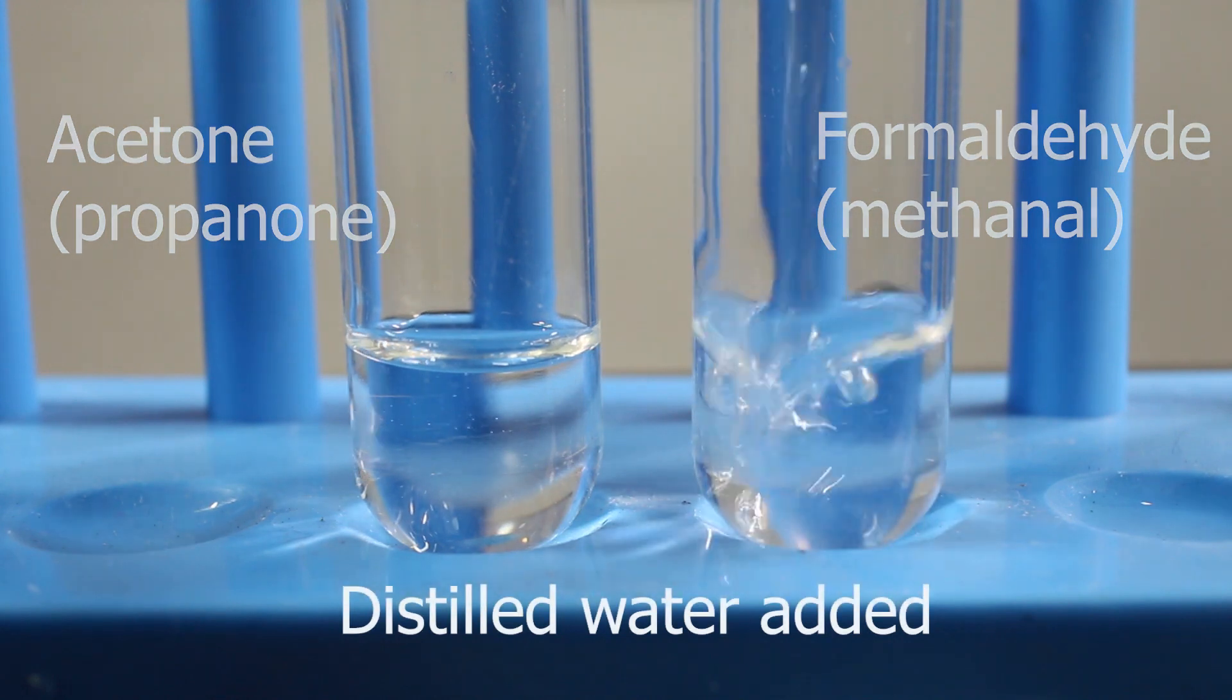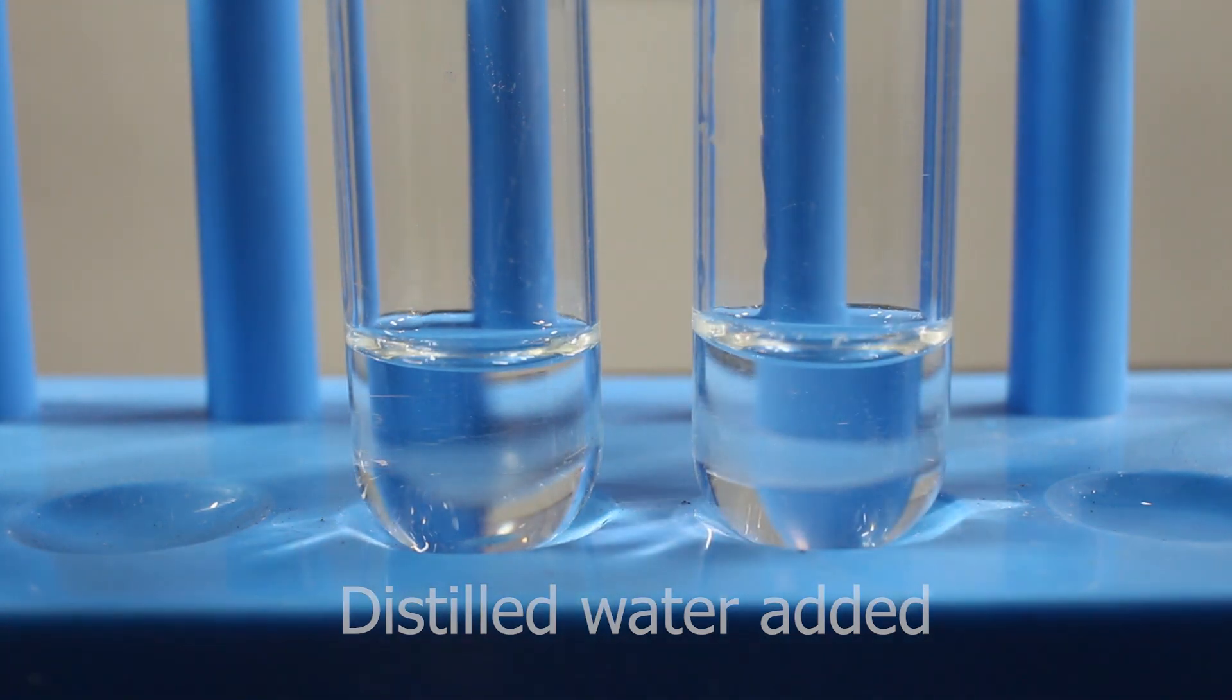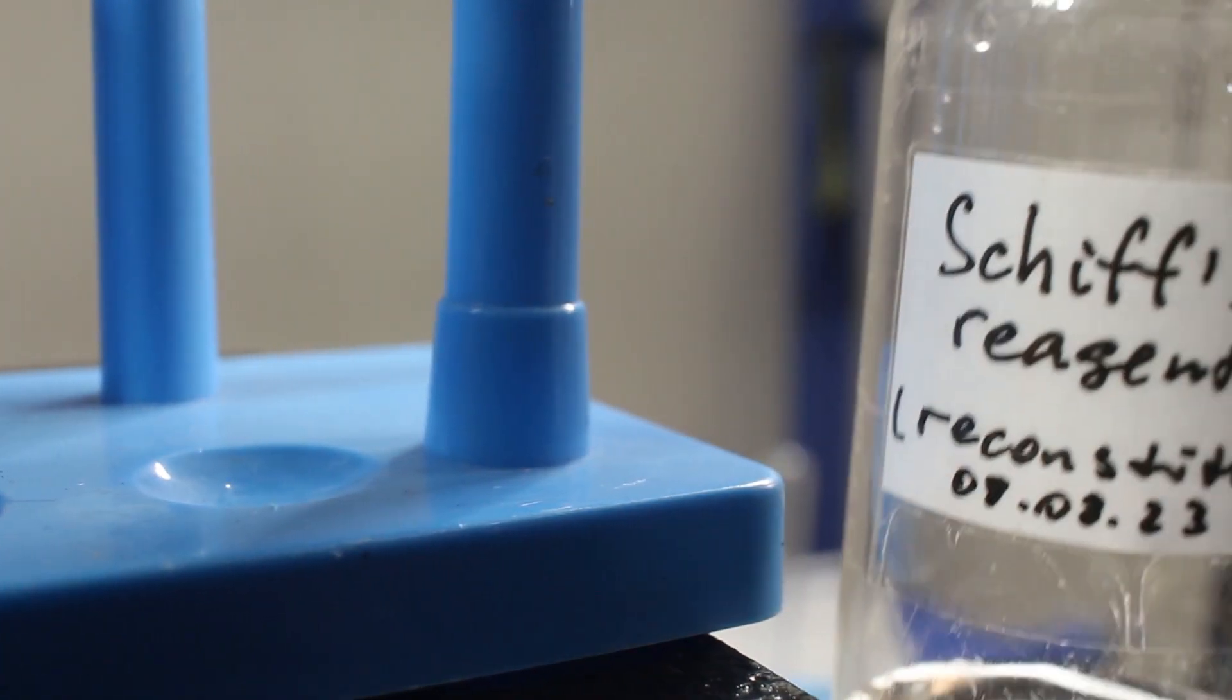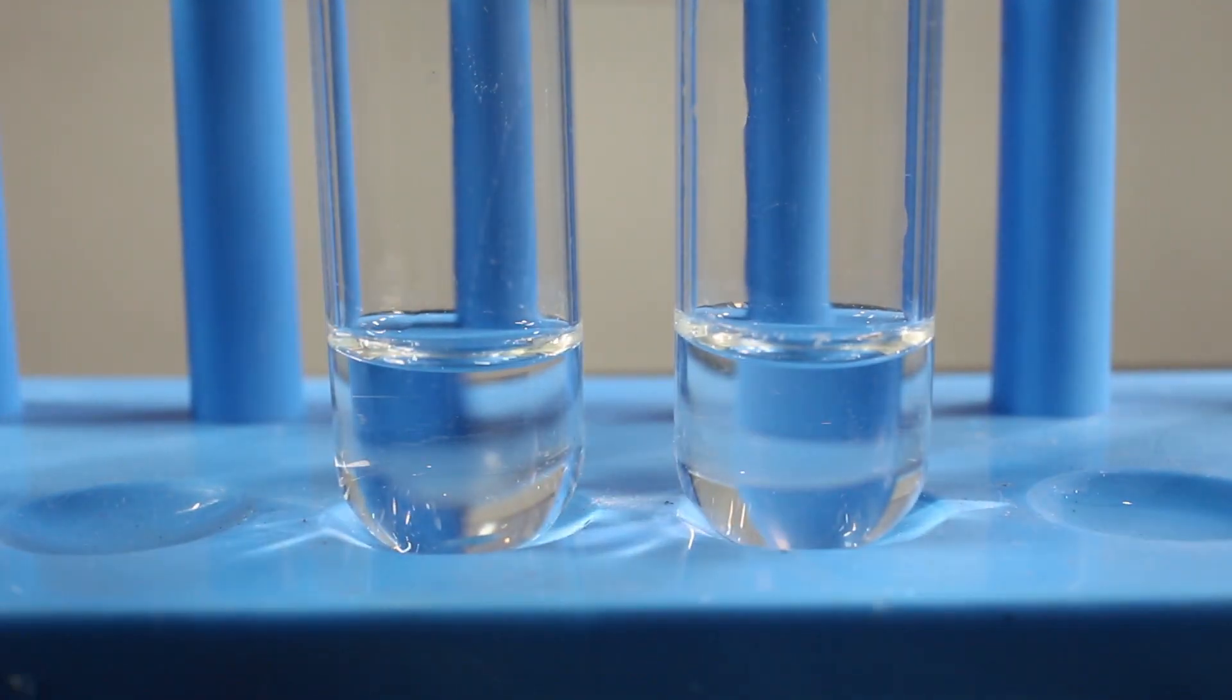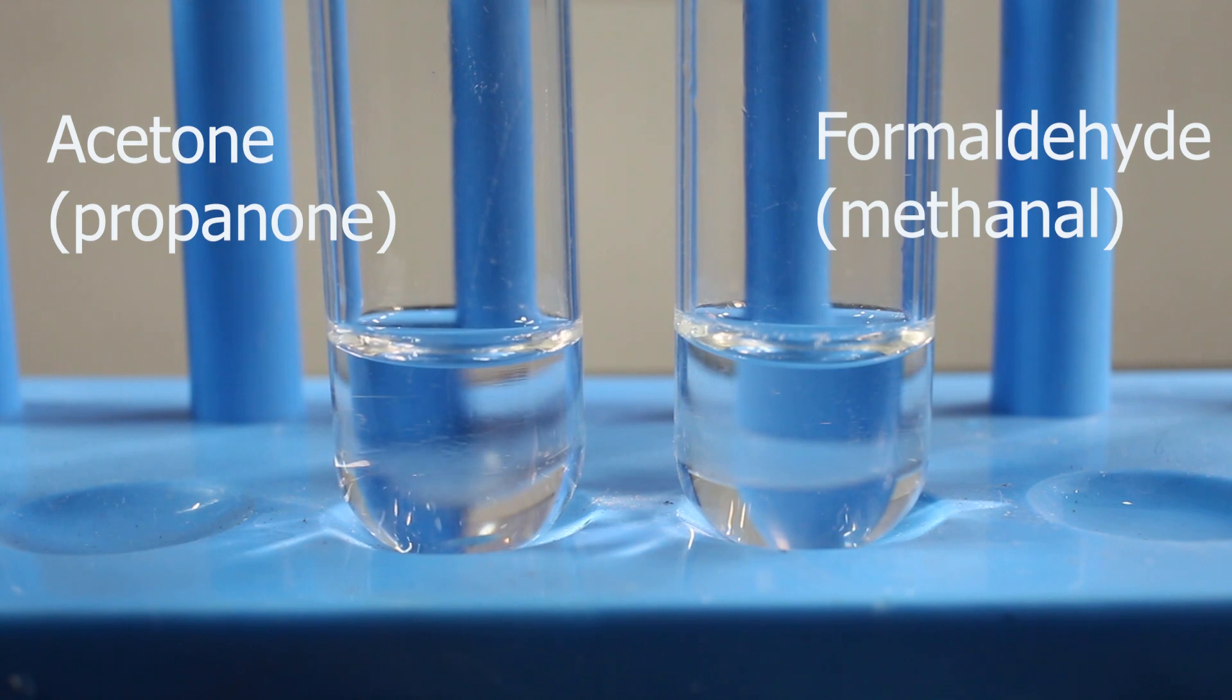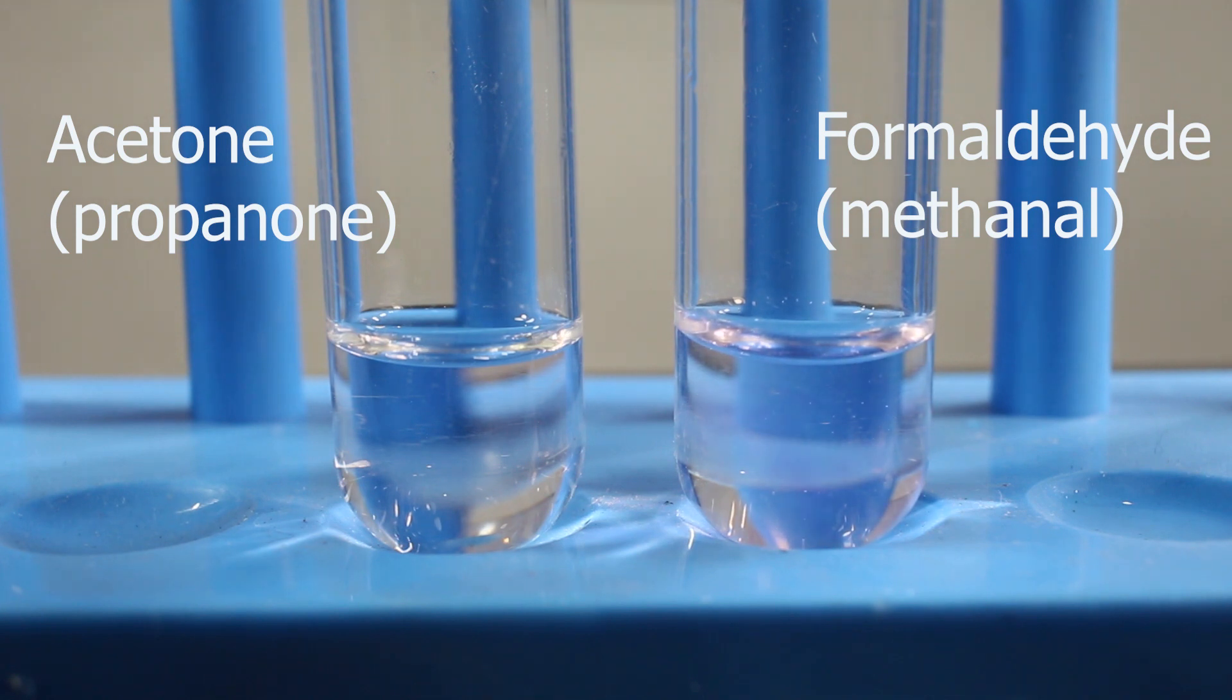Dilution is about 20-30 times, now Schiff's reagent, which gives magenta color if result is positive. First we add it here to acetone, and then to methanol or formaldehyde.